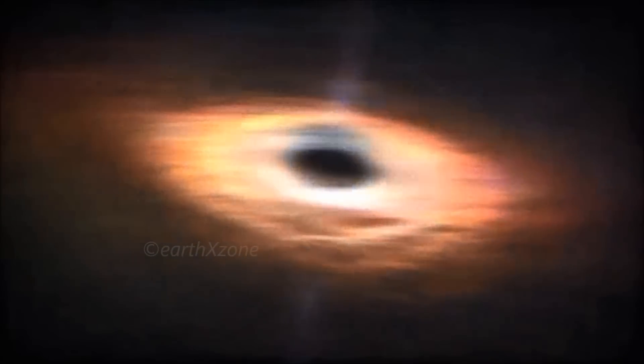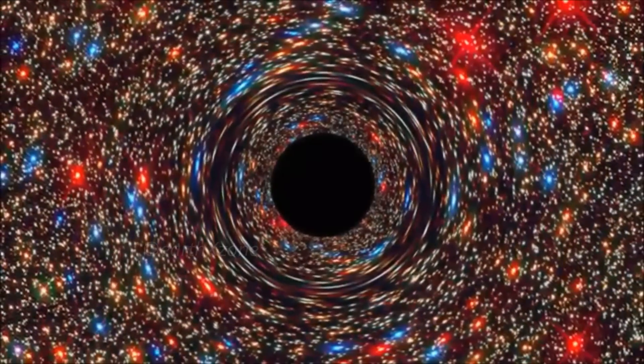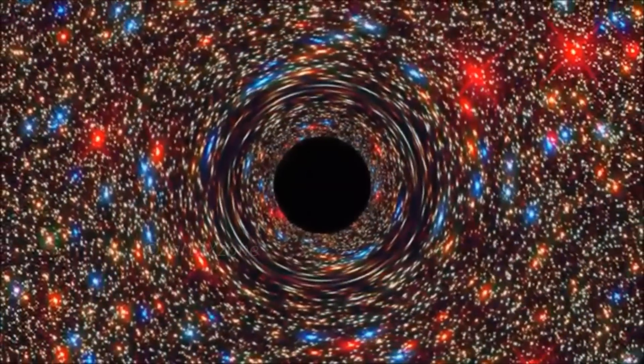The newly discovered black hole is located in NGC 1600, an elliptical galaxy grouped with about just 20 or so other galaxies, making it a sparsely populated area by astronomical standards.